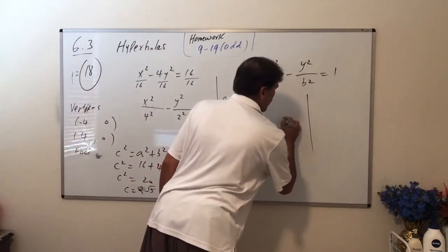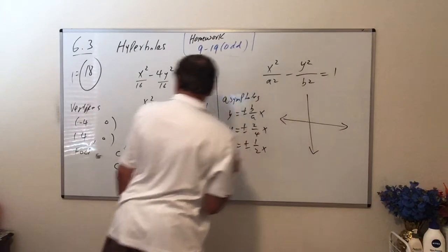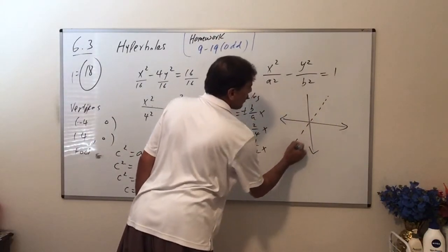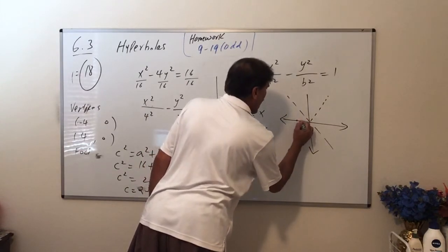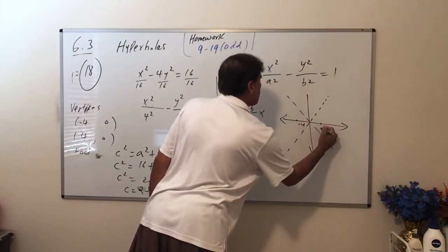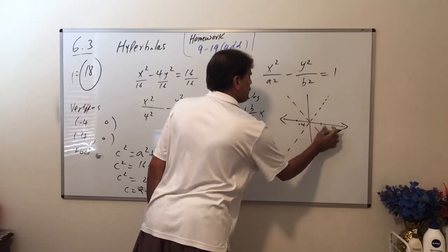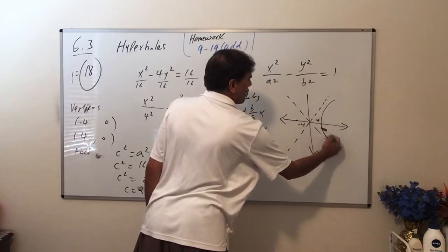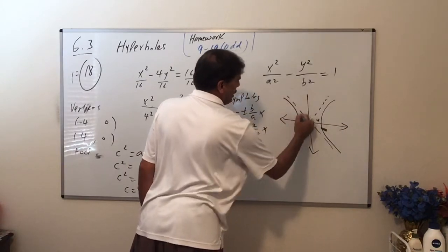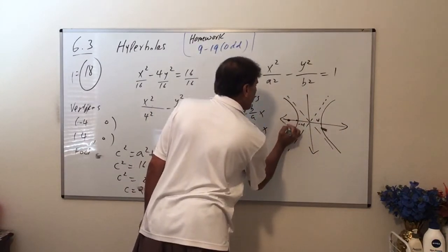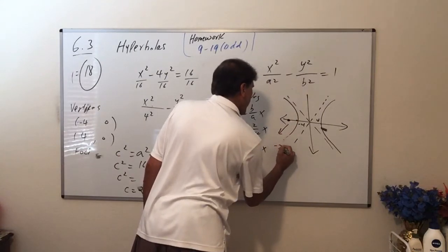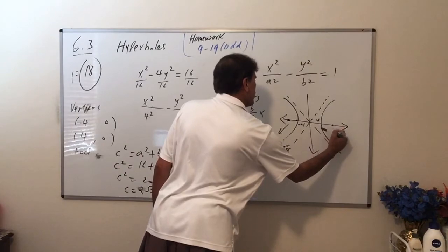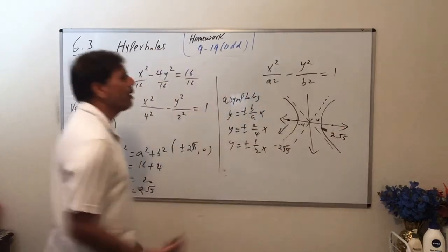So here is what the graph is going to look like—roughly a rough sketch. Here are the asymptotes. This is negative 4, here is positive 4. And your graph is going to look something like this. And this is your focus point here. So this point is negative 2 root 5, and this point is positive 2 root 5. And that's how you graph along the horizontal axis.